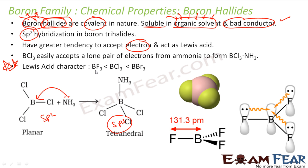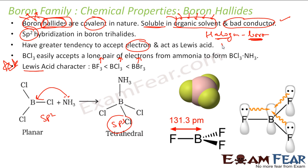The expectation was that since fluorine is more electronegative, BF3 should be more acidic. But that is not the case because of halogen-boron back pi bonding. This back bonding happens predominantly with boron and mostly with fluorine. Fluorine has the maximum tendency of back pi bonding, and this is the reason for this behavior.